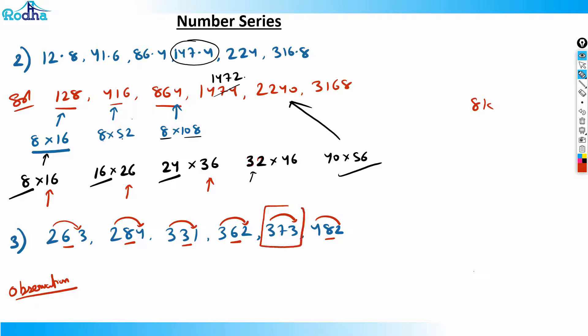The pattern is: the product of the extreme digits equals the middle digit. For 373: 3 × 3 = 9, not 7 — so 373 is the wrong number. For 482: 4 × 2 = 8 ✓. Number series is a chapter where if you find two or three questions in an exam and crack them, you get significantly ahead of others who waste four or five minutes on them.